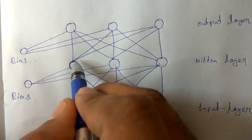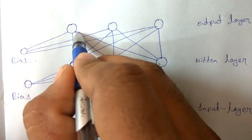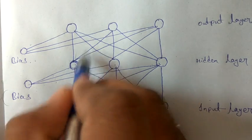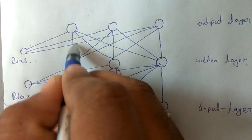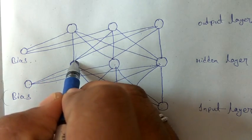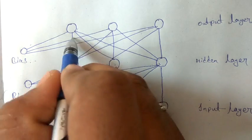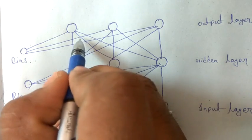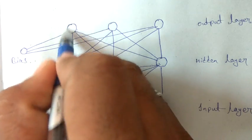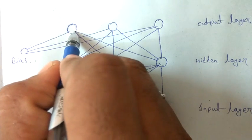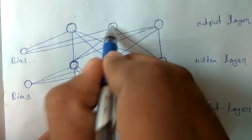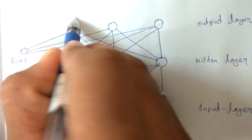We do the same for all three hidden neurons and get three outputs by applying the activation function. These become the inputs for the output layer. The output of the hidden layer travels through these links, is multiplied with the weights of these links, the bias is added, and the activation function is applied to get the final output at each of the three output neurons.